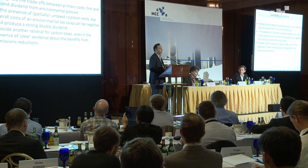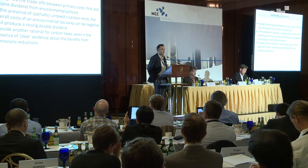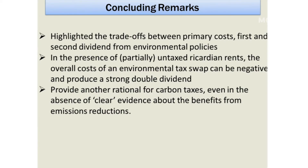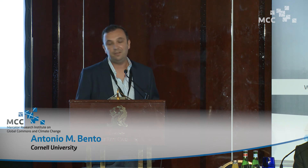In conclusion, what I tried to do in this presentation was to highlight that whenever you complicate the production structure, or allow for suboptimal tax systems to begin with, there is a series of interesting trade-offs between the primary costs, the first and the second dividend, of environmental tax reforms. In particular, in the presence of untaxed or at least partially untaxed Ricardian rents, there is a potential for an overall strong double dividend from the environmental tax reform. This gives us another rationale for promoting carbon taxes, even in the absence of clear evidence about the benefits of emissions reductions, at least up to a certain point.